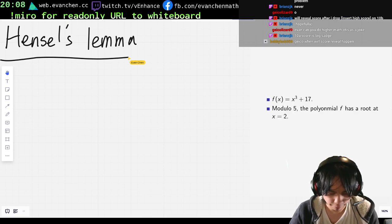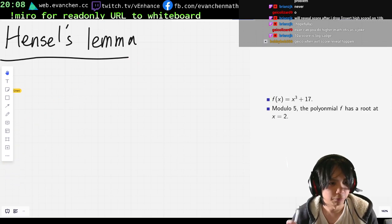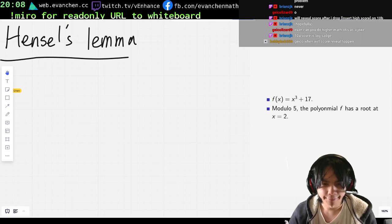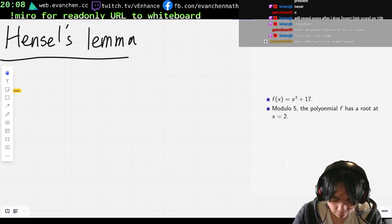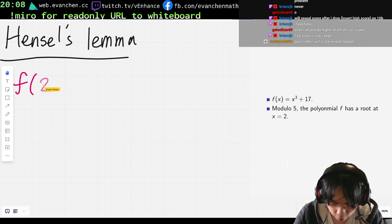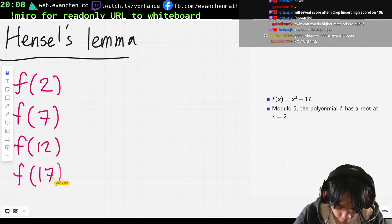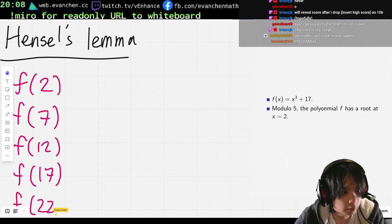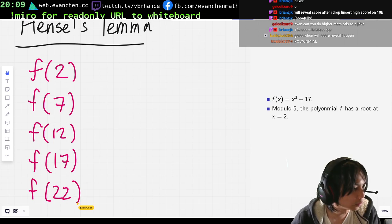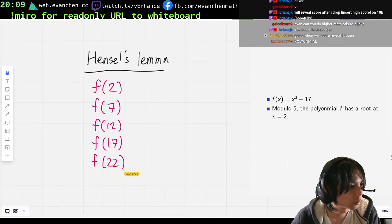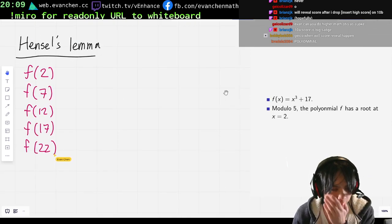So what I'm going to do now is I'm going to look at what the value of f is modulo 25 at this root. When I look at modulo 25, this x equals 2 root sort of lifts into five different roots. You're interested in f of 2, f of 7, f of 12, f of 17, and f of 22.